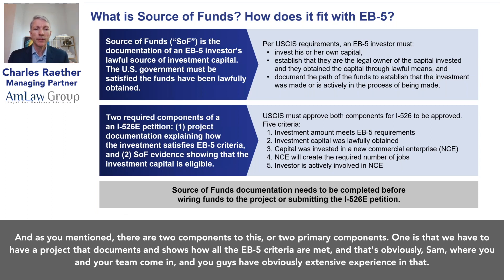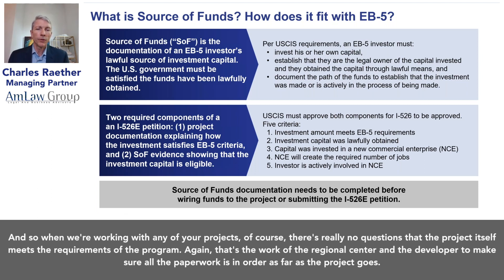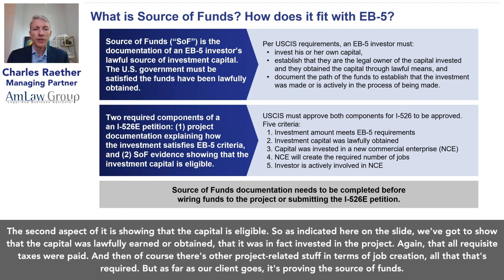There are two primary components. One is a project that documents and shows how all the EB5 criteria are met — that's where Sam and his team come in. The second aspect is showing that the capital is eligible: the capital was lawfully earned or obtained, was in fact invested in the project, and all requisite taxes were paid. It's ironic how often clients say they opened a bank account in Switzerland or even in the U.S., their money was checked and it's clean. Most clients underestimate what's involved in preparing the source of funds work.